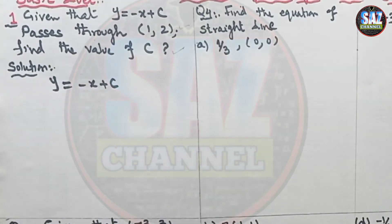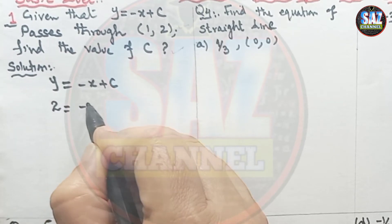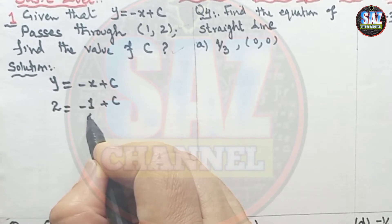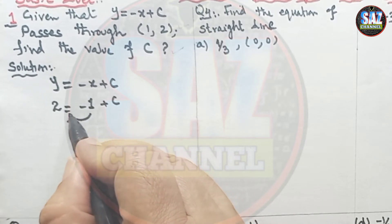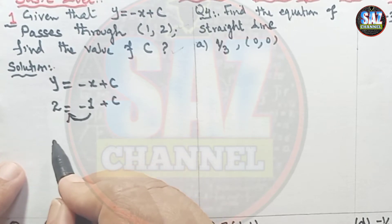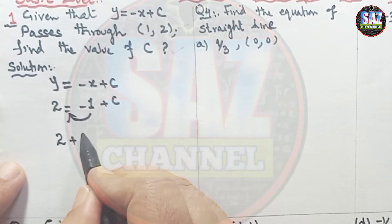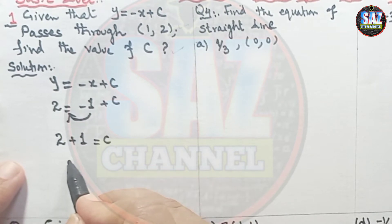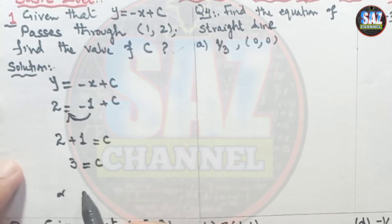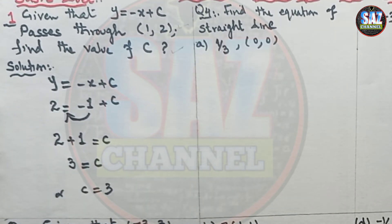Replacing the point: 2 = -(1) + c. You need a good command of basic algebra and integers to solve simple linear equations. Shifting 1 to the other side by changing the sign gives 2 + 1 = c, which gives c = 3. Very easy — and an important part of your Cambridge International exam.